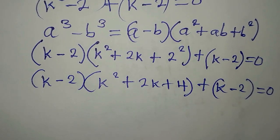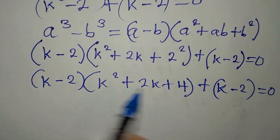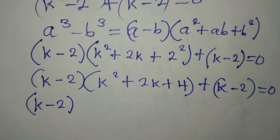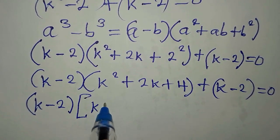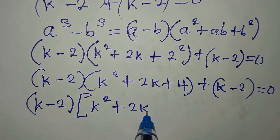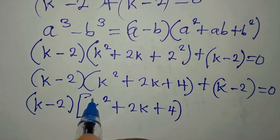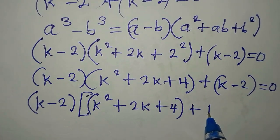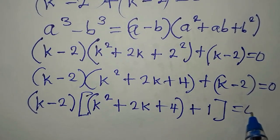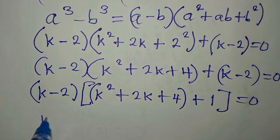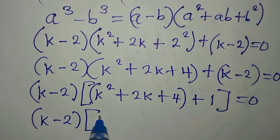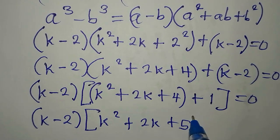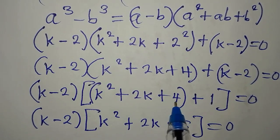We can see that k minus 2 is common to both terms, so we factor it out. We have k minus 2 times open bracket k squared plus 2k plus 4, plus 1, close bracket equals zero. Note: do not forget to write the 1, otherwise it will be wrong. This simplifies to k minus 2 times k squared plus 2k plus 5 equals zero, since 4 plus 1 equals 5.